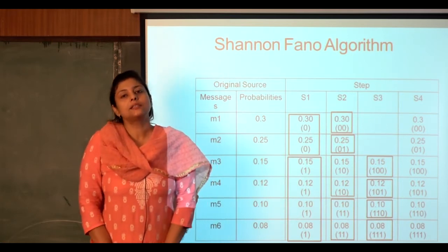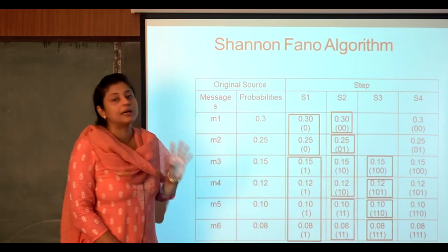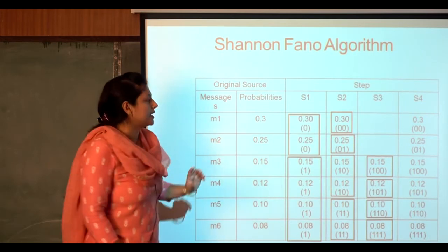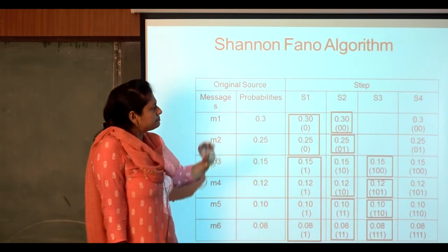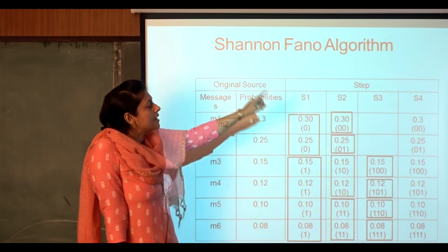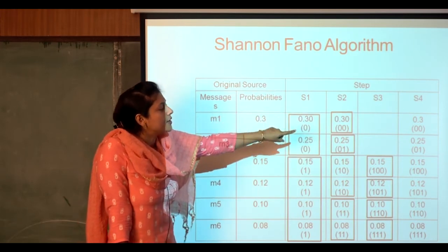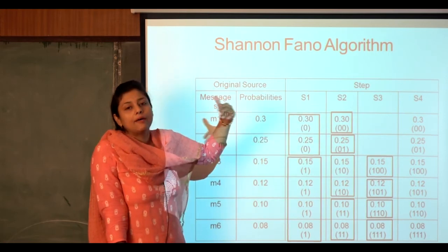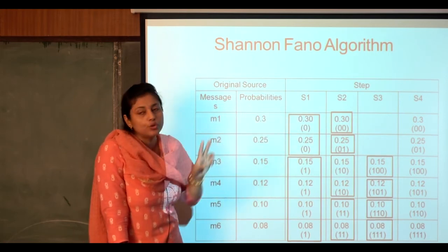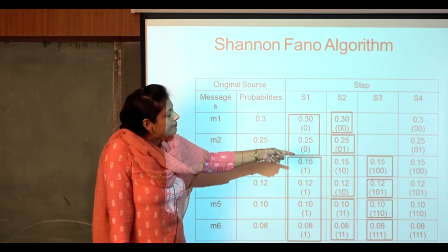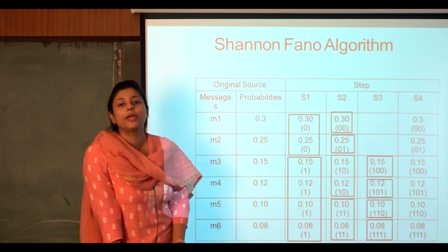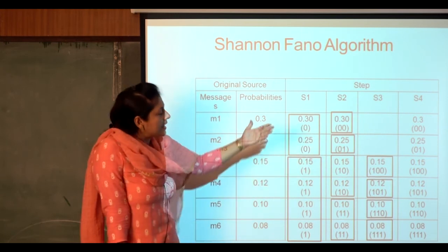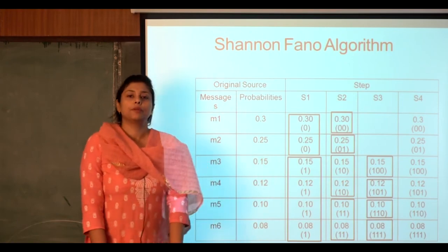This fulfills the requirements of source encoding, which states that messages with higher probability should be encoded with fewer bits. Here, 0.3 and 0.25 have higher probability and are encoded with two bits, while 0.15, 0.12, 0.10, and 0.08 have lower probabilities and are encoded with three bits.